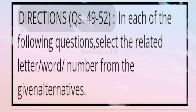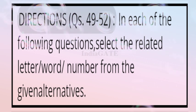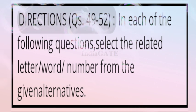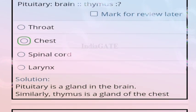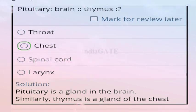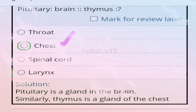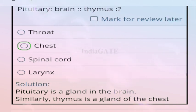Direction for questions 49 to 52: select the related letter, word, or number from the given alternatives. Question 49: pituitary is related to brain, so thymus is related to what? Correct answer is option B, chest — because pituitary is a gland in the brain and thymus is a gland in the chest.